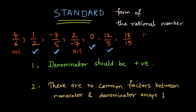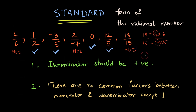For 18 by 15, I can write 18 as 3 times 6 and 15 as 3 times 5, so 3 is a common factor between 18 and 15. Therefore 18 by 15 is not in the standard form. So we have identified the rational numbers in the standard form from the given list.